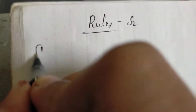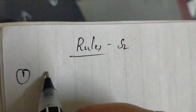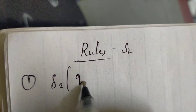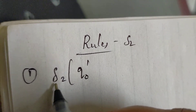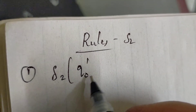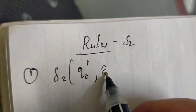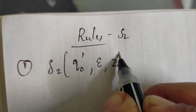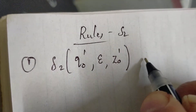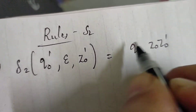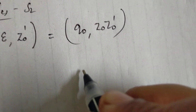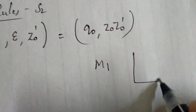The first rule is: delta2 of q0-prime, where delta2 is the transition function of M2. Starting from state q0-prime, without consuming any input, and z0-prime is the bottom of the stack, going to q0, pushing z0 and z0-prime onto the stack.